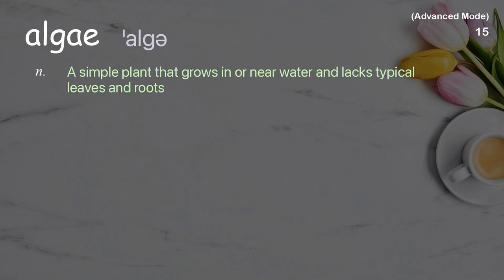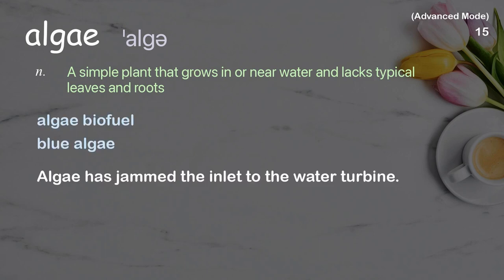Algae: a simple plant that grows in or near water and lacks typical leaves and roots. Examples: algae biofuel, blue algae. Algae has jammed the inlet to the water turbine.